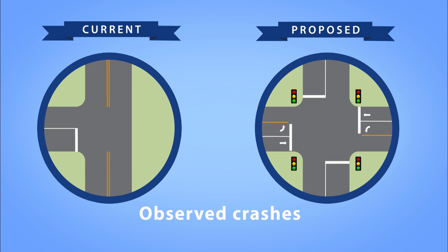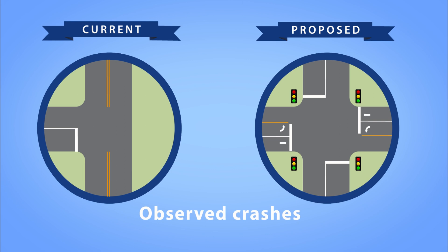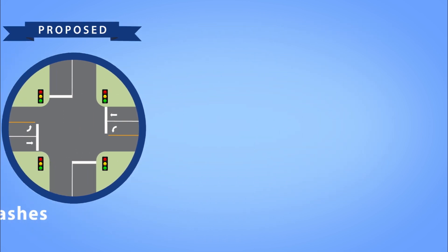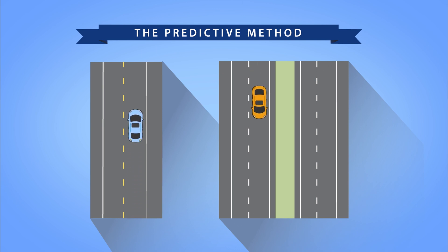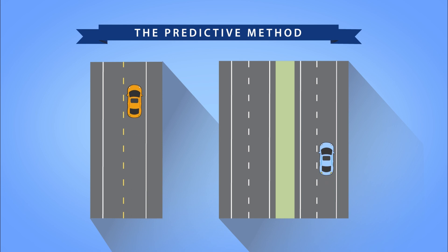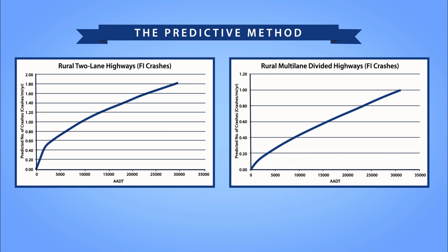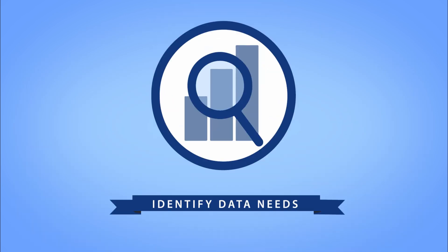When there are significant differences between the existing and proposed conditions, the observed crashes are no longer relevant. It is appropriate not to use the observed crash data because the scenario of interest is greatly different from the current conditions, or the observed crash data is not applicable to future conditions. For example, if you would like to consider converting a two-lane road to a four-lane divided road, the historical crashes under the two-lane undivided condition are not relevant to the future safety performance under the four-lane divided condition. In this case, you would appropriately rely on the predicted crashes to estimate the safety performance.